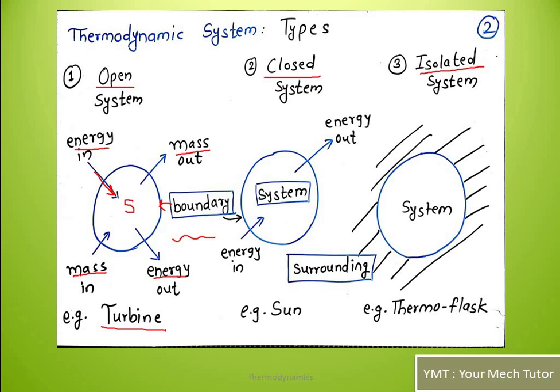The classic example of an open system is a turbine. Consider a steam turbine — steam is a quantity of matter, and it enters the turbine and exits it, so there is mass transfer. The steam comes in with a certain velocity, meaning it carries kinetic energy. That kinetic energy causes the turbine blades to rotate, and the shaft connected to the turbine also rotates — so kinetic energy is converted into mechanical energy.